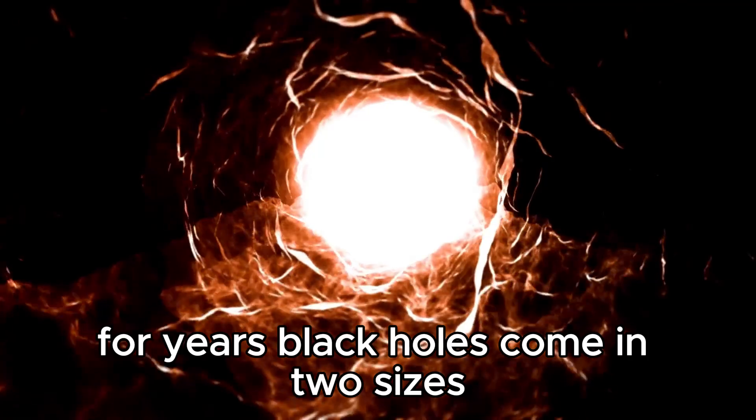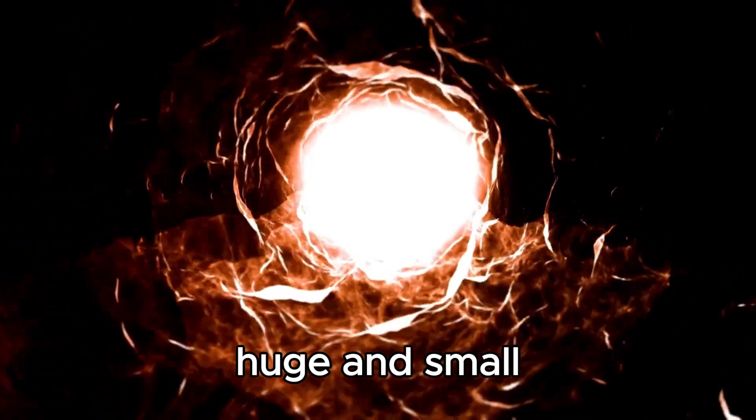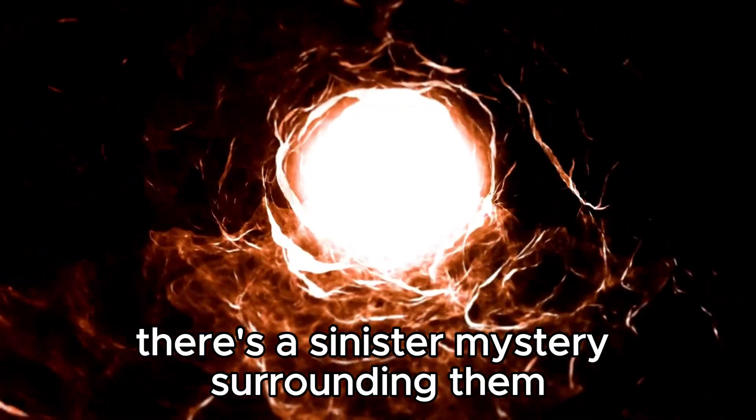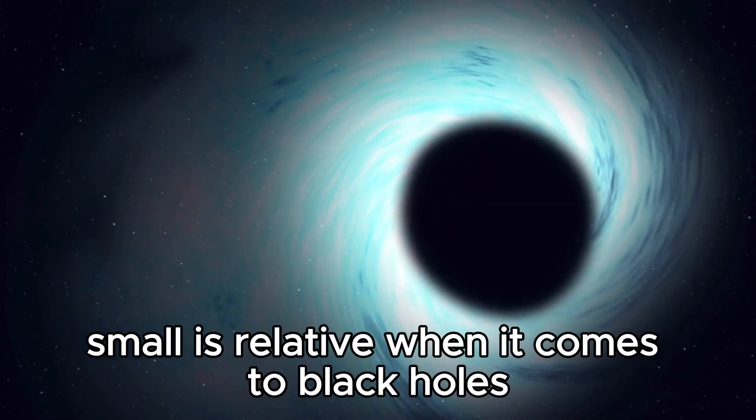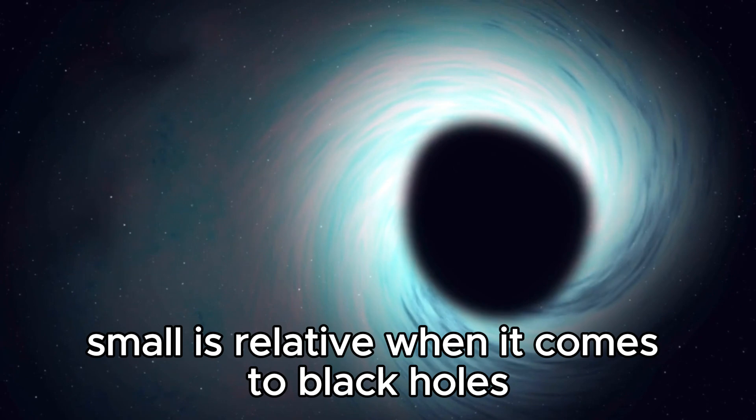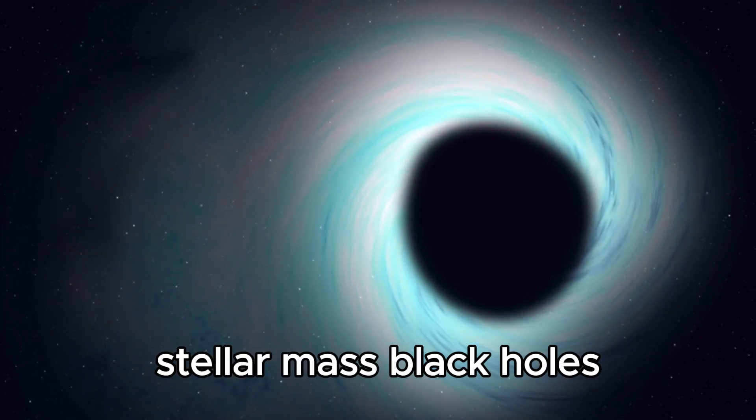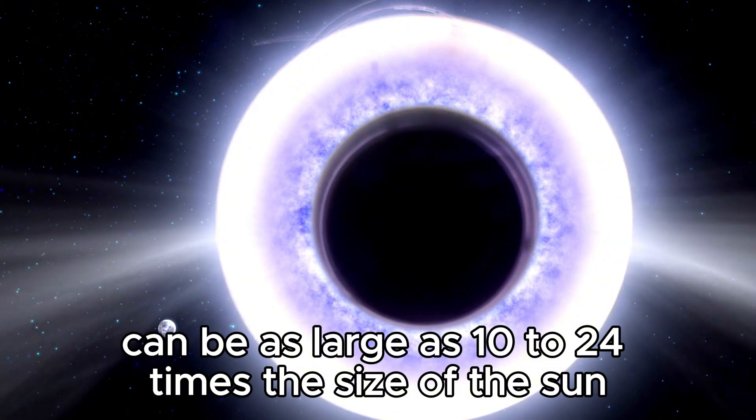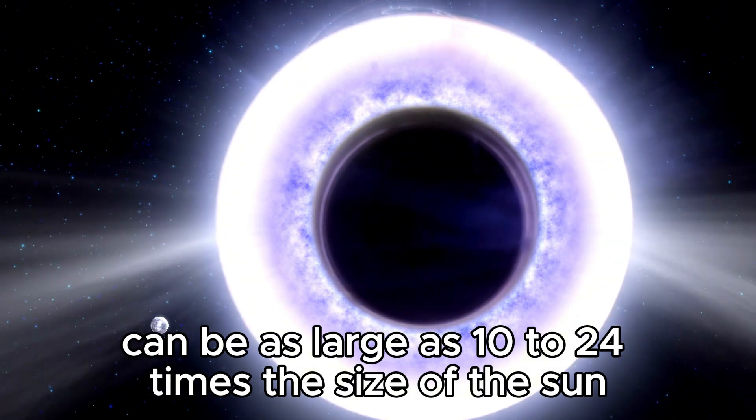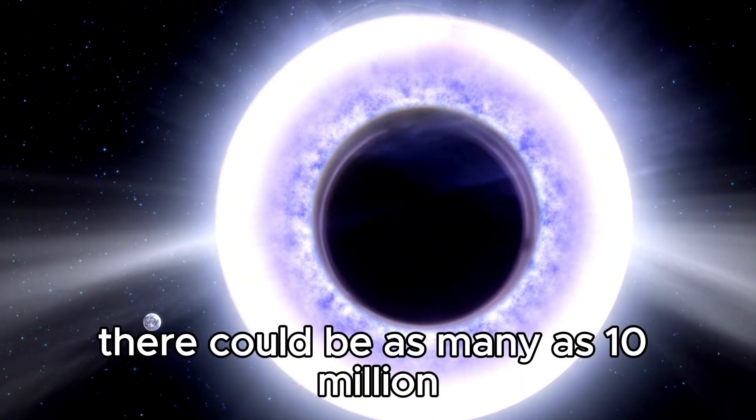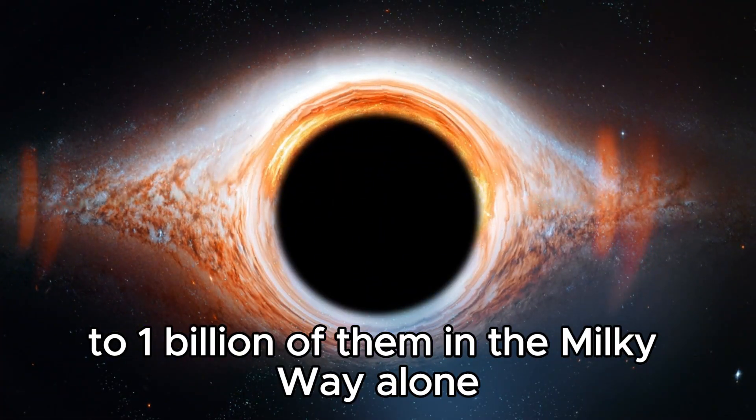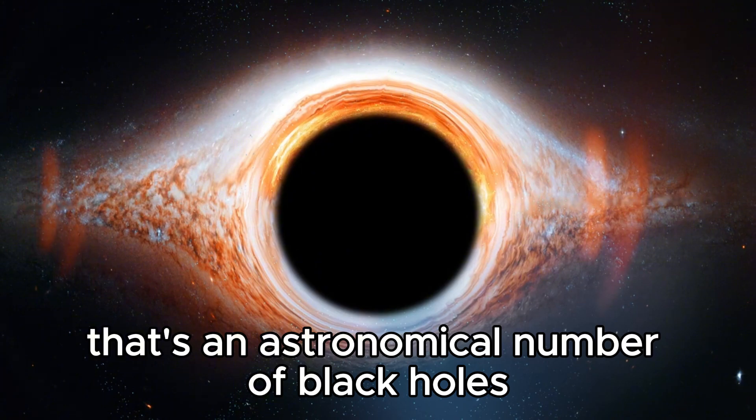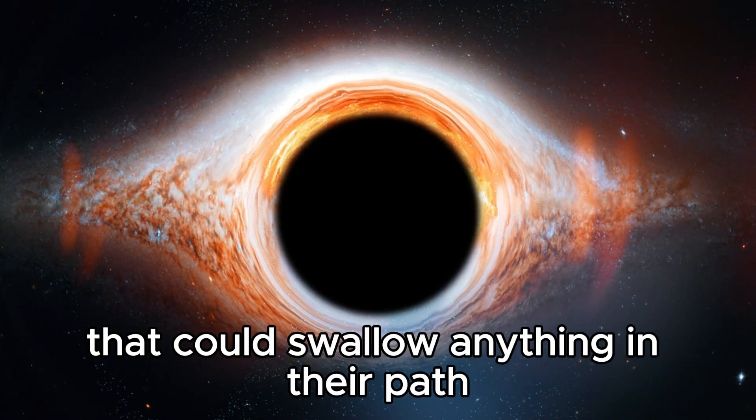Black holes come in two sizes, huge and small. There's a sinister mystery surrounding them that we can't seem to unravel. But here's the twist. Small is relative when it comes to black holes. Stellar mass black holes, remnants of massive stars, can be as large as 10 to 24 times the size of the sun. There could be as many as 10 million to a billion of them in the Milky Way alone.